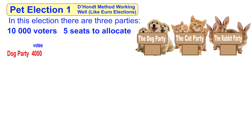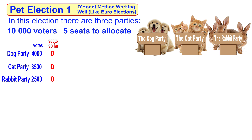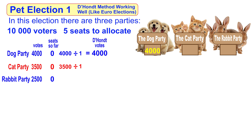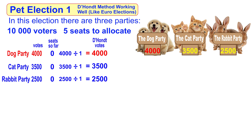The dog party has 4,000 votes, the cat party has 3,500 votes, and the rabbit party has 2,500 votes. Since there are no seats already, the seats so far is zero. So all we're doing for each of them is adding one onto the zero and getting one — dividing by one and getting the same number: 4,000 for the dog party, 3,500 for the cat party, and 2,500 for the rabbit party.